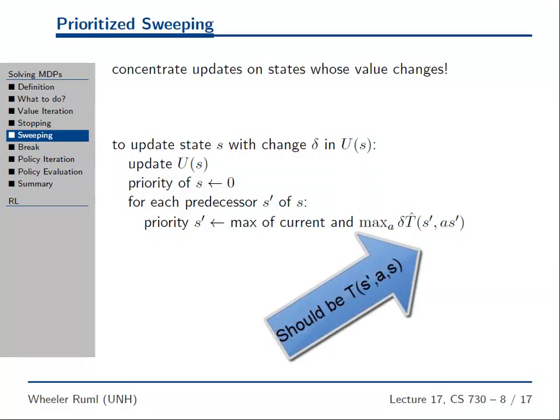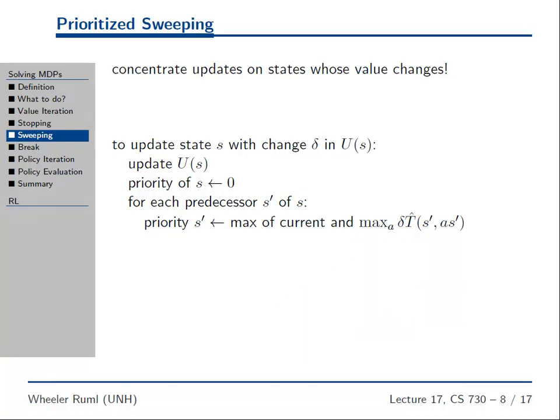This is how much S changed. The most that S prime could change would be delta times the probability of ending up in S. So the urge to update is percolating back to those states that have the potential of changing a lot. It makes enormous sense — you're only updating the states that actually change. That's a huge improvement over value iteration.